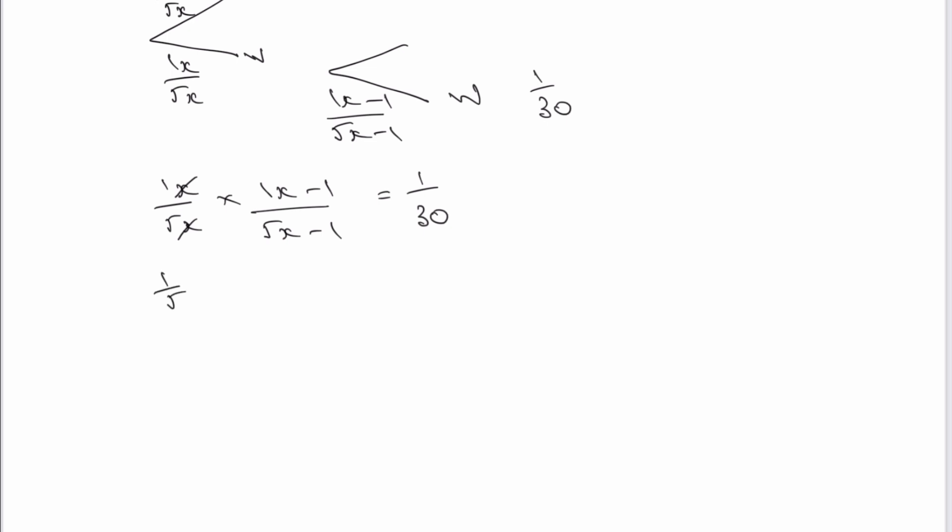So what have I got now? Well, I've got 1 fifth multiplied by, and I'm going to put this in brackets now, x minus 1 divided by 5x minus 1, and that equals 1 over 30. So let's just tidy that up a little bit.